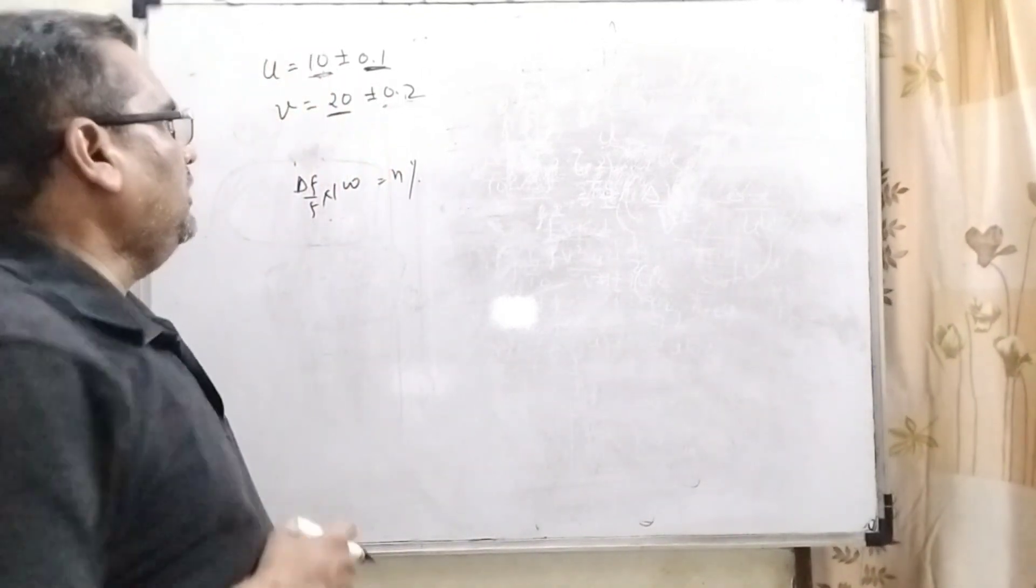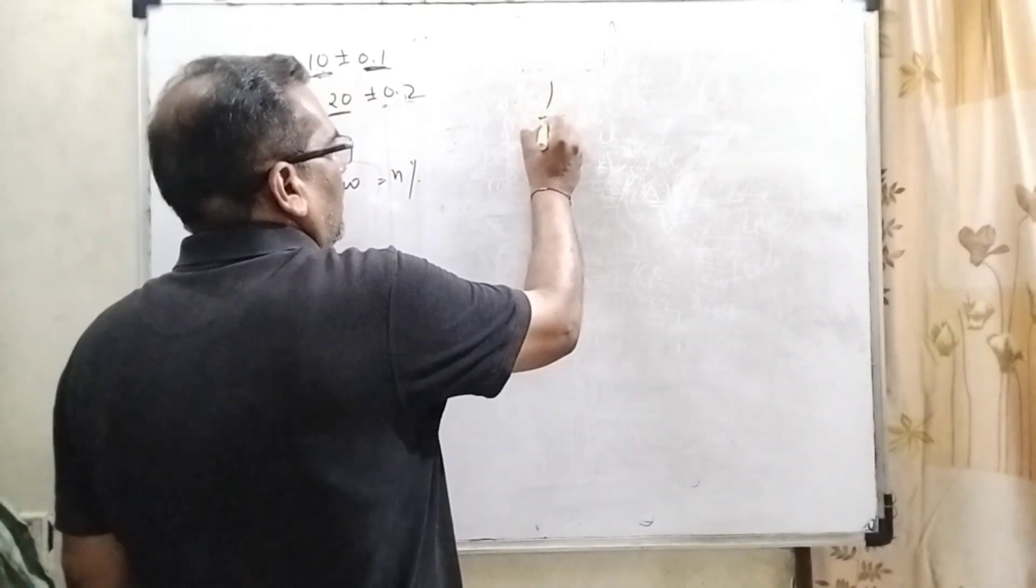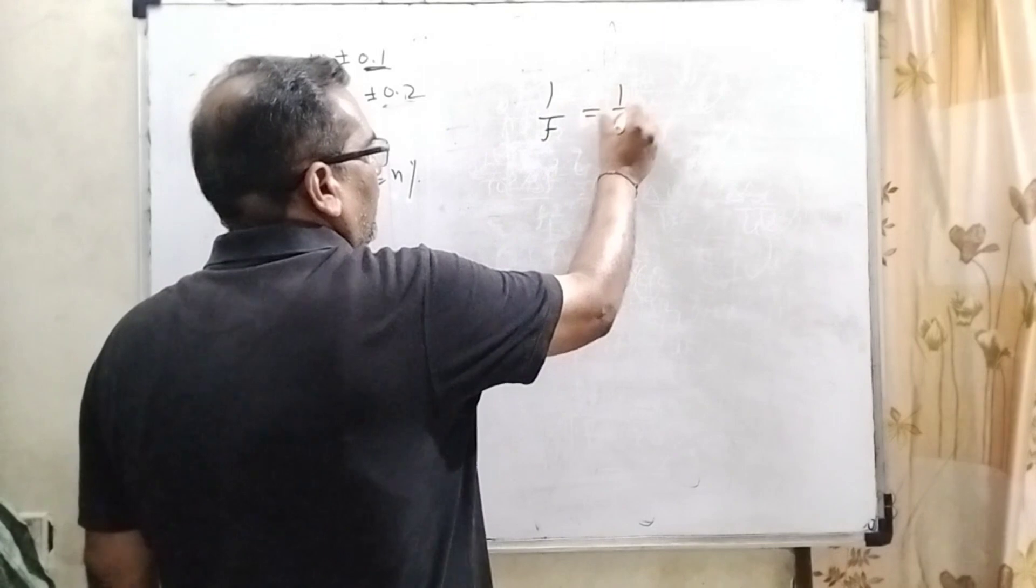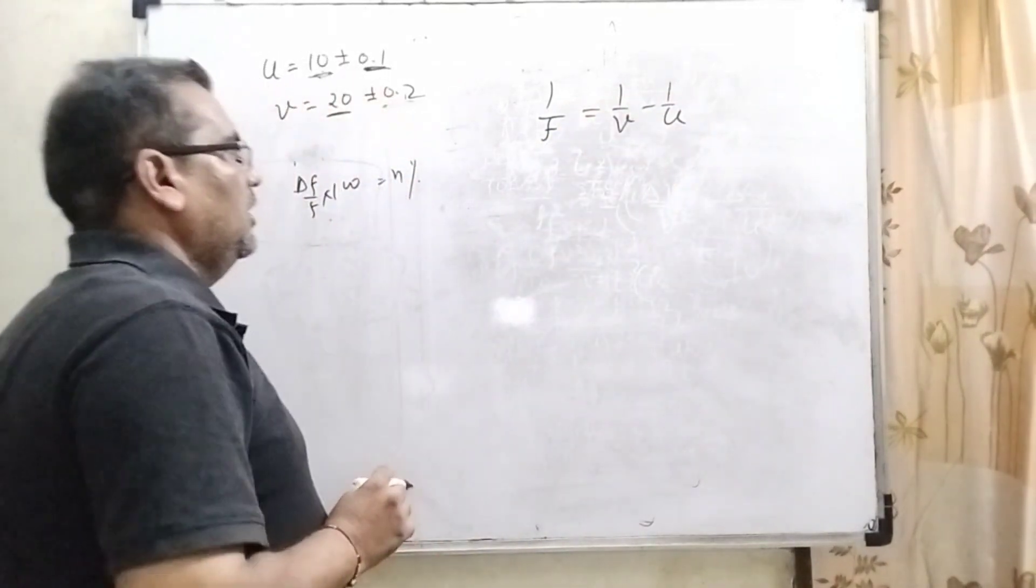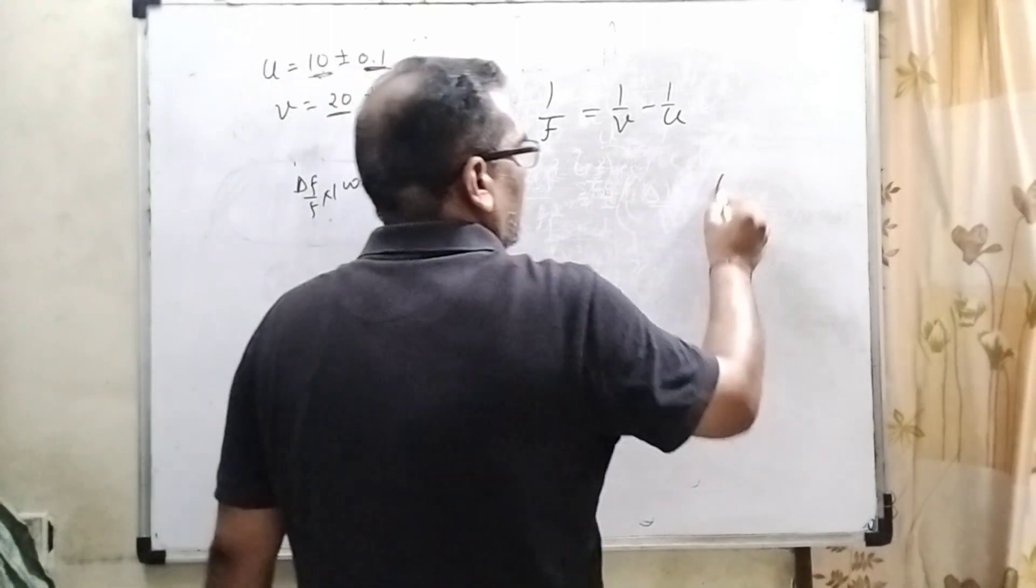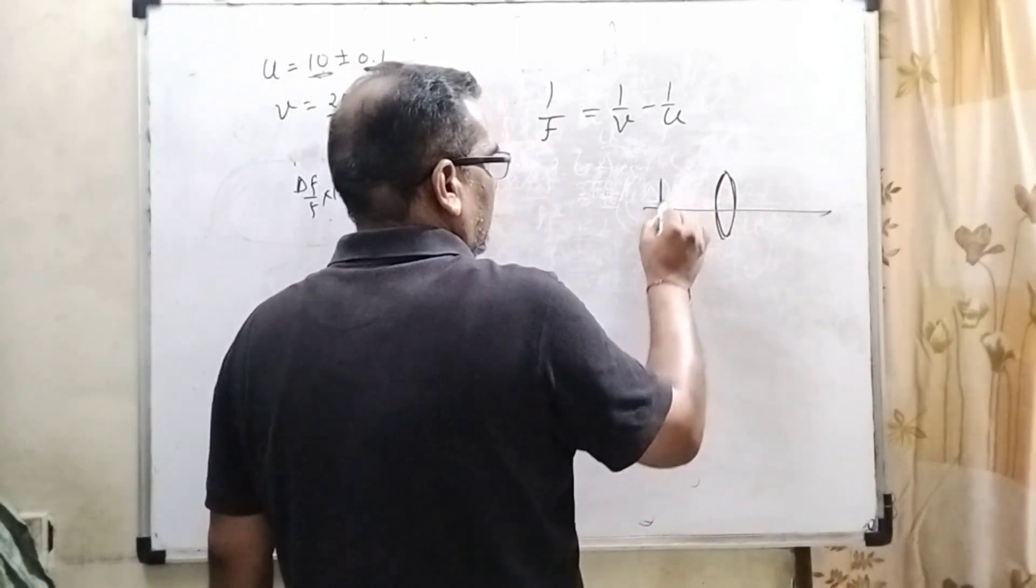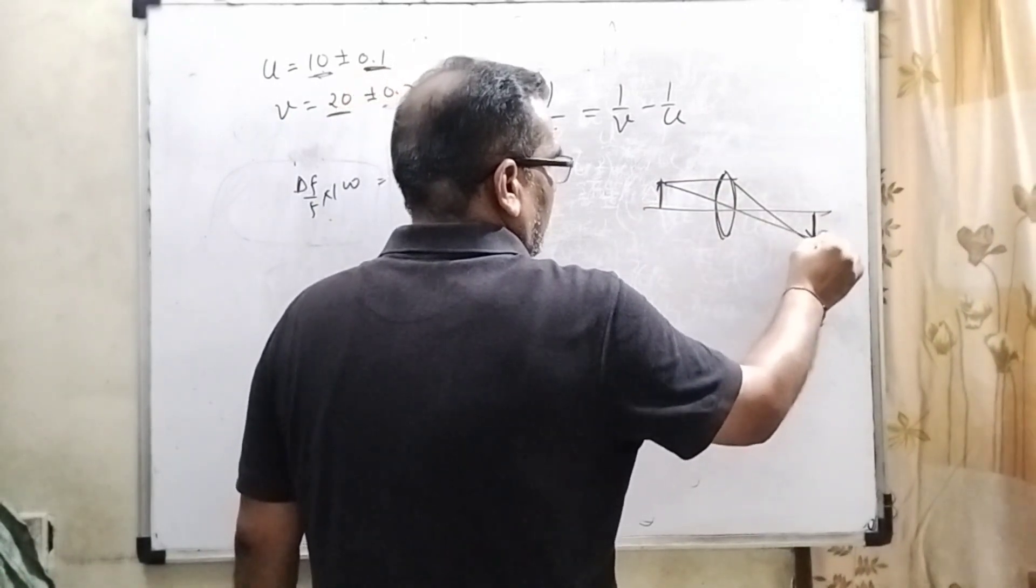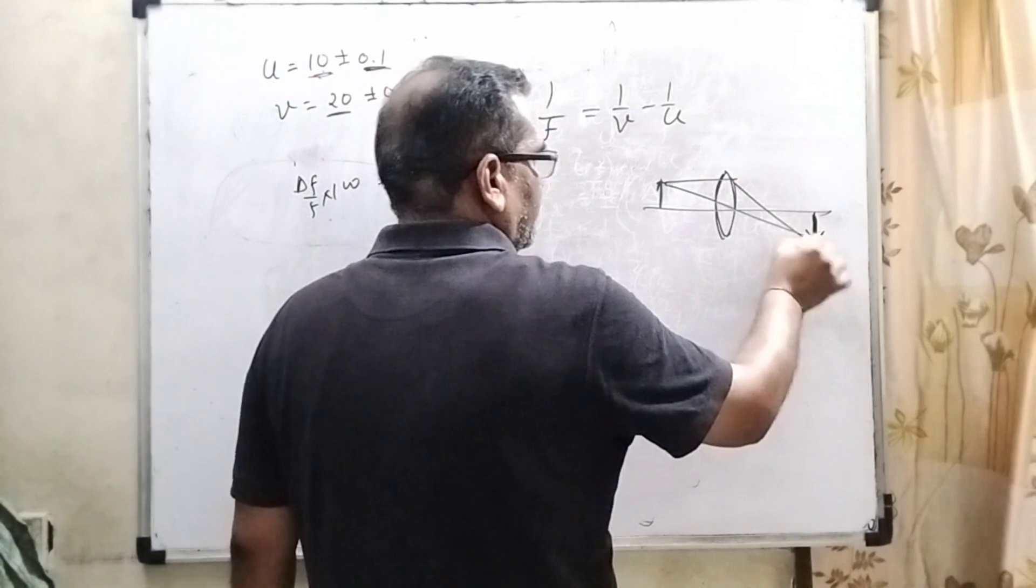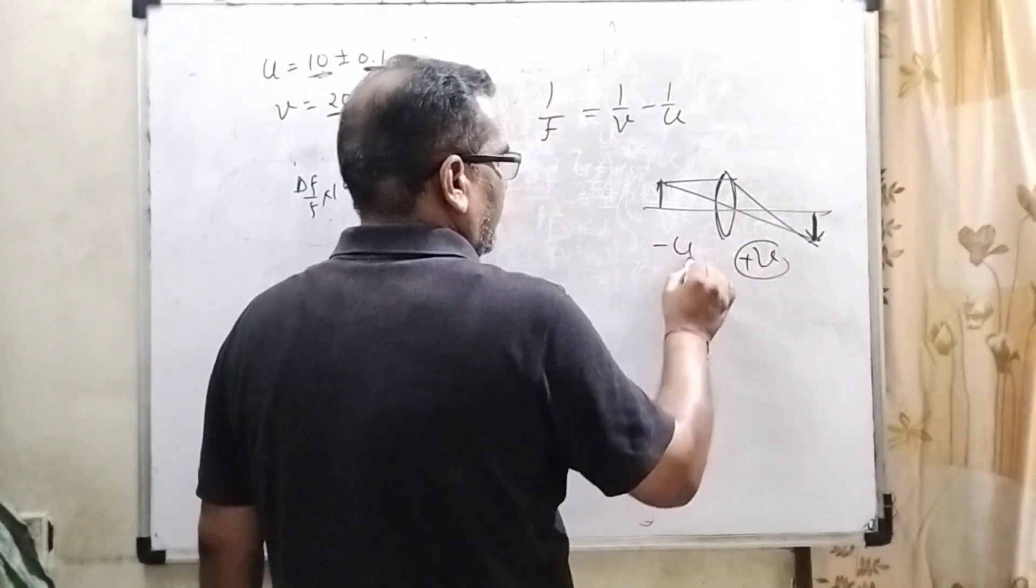Let us first find out the real value of focal length. 1/f = 1/v - 1/u. Here you can see the convex lens, the object, and the image is found on the right side of the lens. Therefore, v should be taken positive and u should be taken negative.